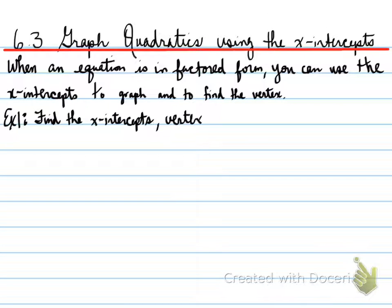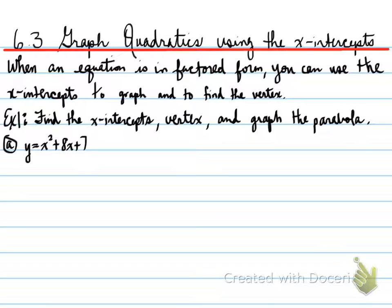Let's do the first example by finding the x-intercepts, vertex, and we're going to graph the parabola. So here's our first equation, y equals x squared plus 8x plus 7.